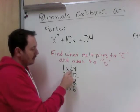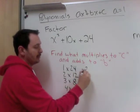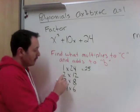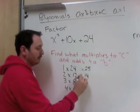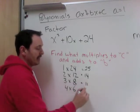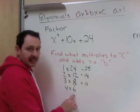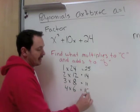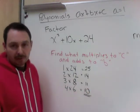1 and 24, if we added them, would be 25. 2 and 12 would be 14. 3 and 8 would be 11. 4 and 6 would be 10. And that was the b we were looking for.